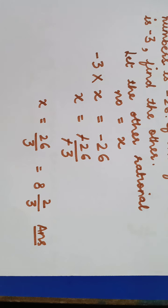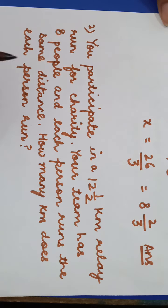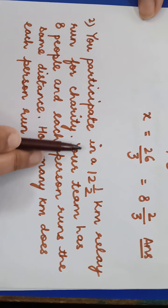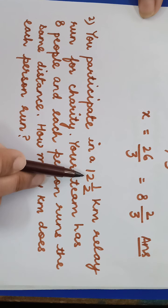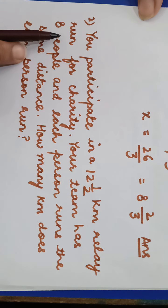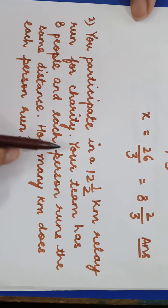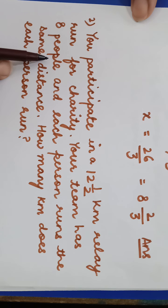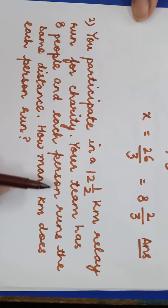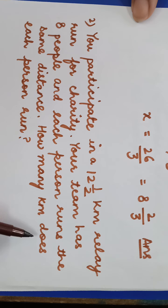Now the second question: you participate in a 12 and 1 upon 2 kilometer relay run for charity. Your team has 8 people and each person runs the same distance. How many kilometers does each person run?